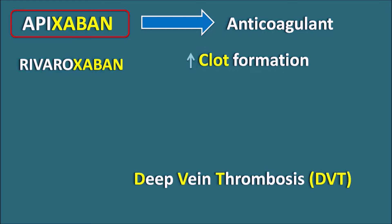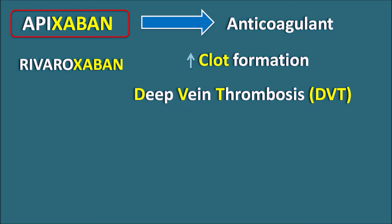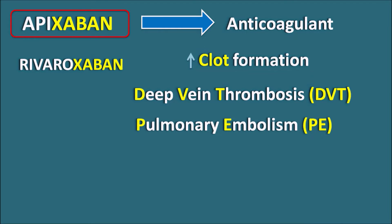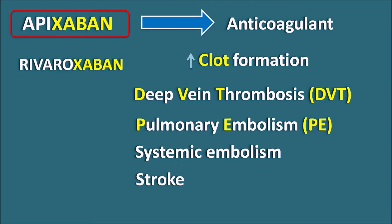Under a few clinical conditions there is excessive clot formation — for instance, in case of deep vein thrombosis (DVT), and this DVT can be converted into pulmonary embolism (PE). Sometimes we can also observe embolism within the systemic circulation. All these conditions may lead to stroke in patients.